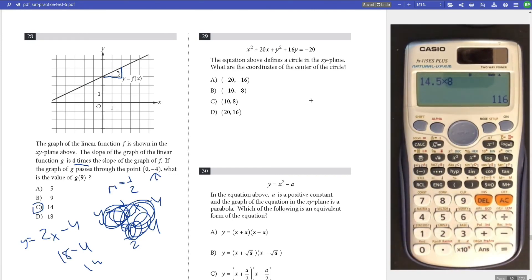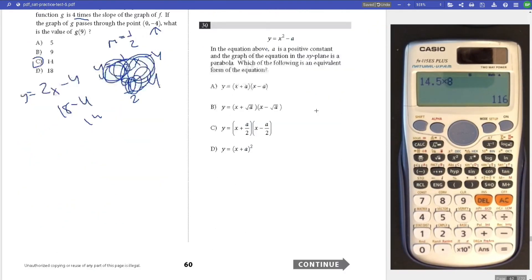Number 29, we're given the circle with the coordinates of the center. For this one, you have to complete the square. X squared plus 20x, 20 divided by 2 is 10 squared is 100. Plus Y squared plus 16y, 16 divided by 2 is 8 squared is 64. This value doesn't matter because we're finding the center. Complete the square by factoring. You can see that the center is negative 10 and negative 8. Answer is B.